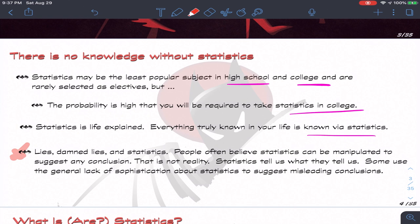Unfortunately, people often hear this phrase: there's lies, damned lies, and then there's statistics. People often believe statistics can be manipulated to suggest any conclusion. And that's simply not reality. People are the problem, not statistics. People lie, and people use deceptive tactics to display information to make it seem like their point is either pro or con, one way or the other. It's not the data that will ever tell you wrong. Statistics tells you what they tell us.